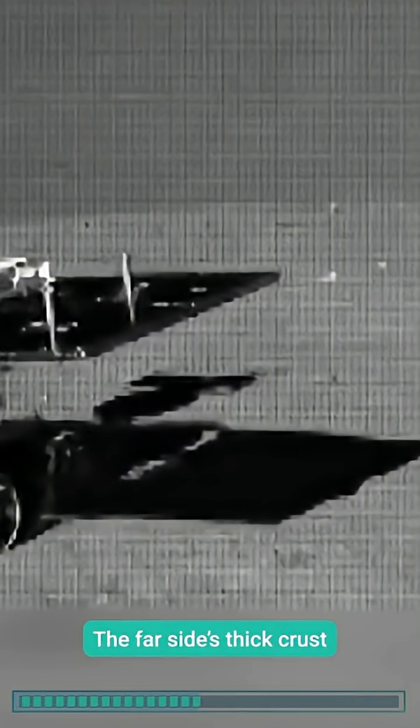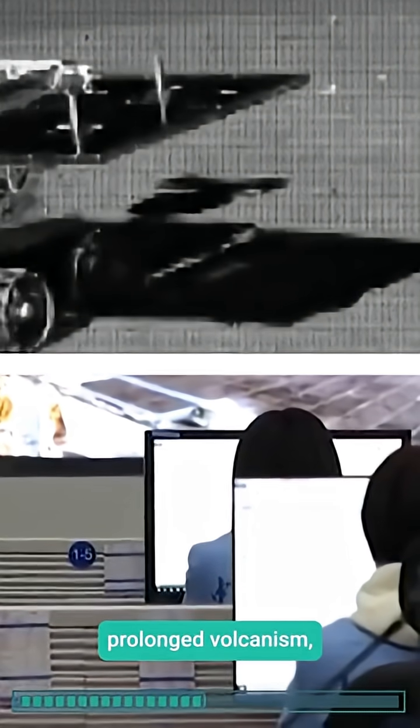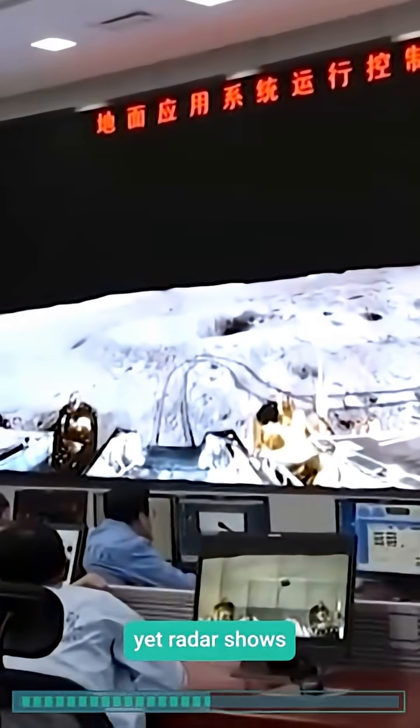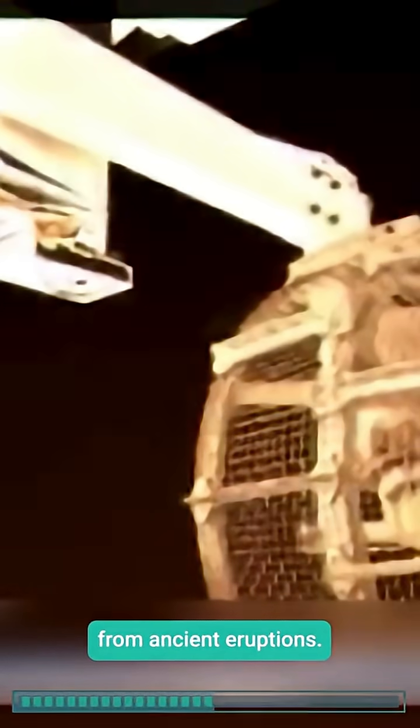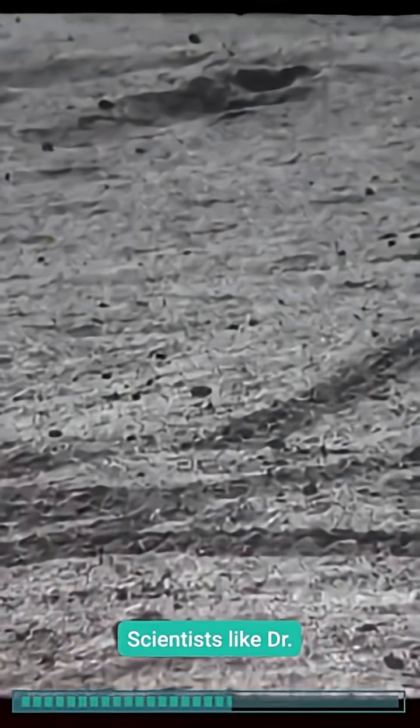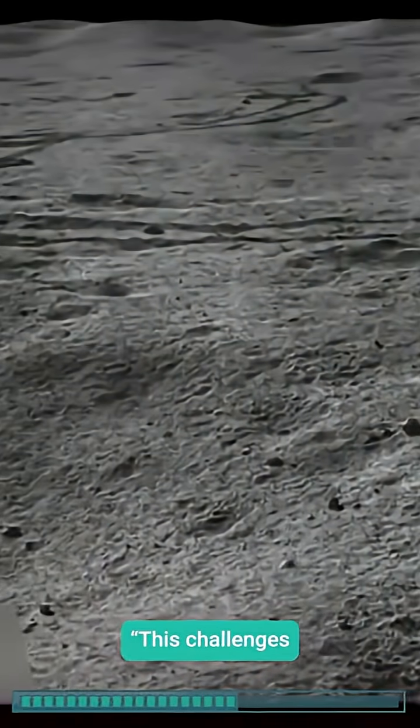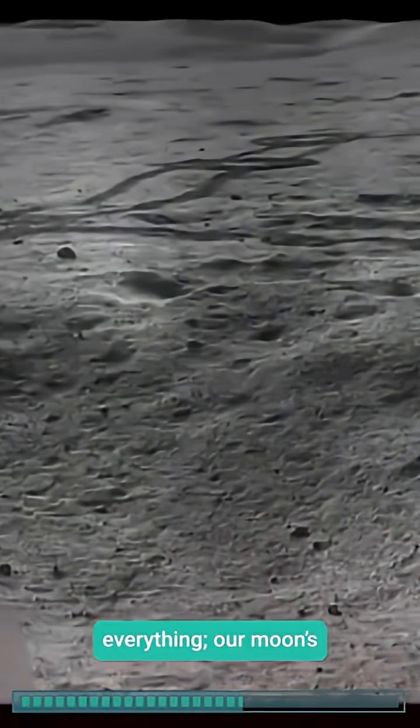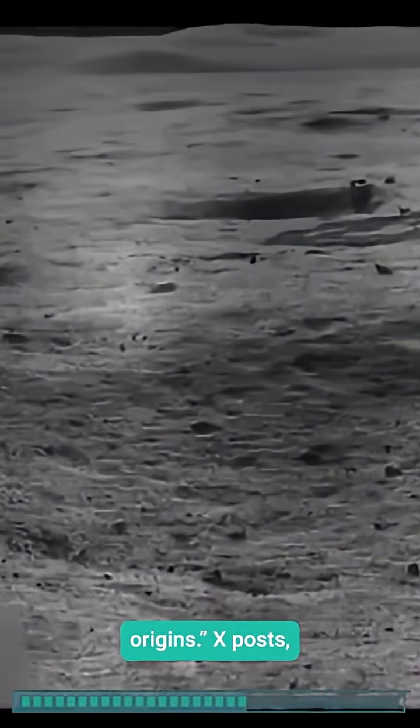The far side's thick crust shouldn't host prolonged volcanism, yet radar shows layered basalt from ancient eruptions. Helium-3's abundance defies models of lunar formation, suggesting unknown processes. Scientists like Dr. Li Wei are floored—this challenges everything: our moon's history, Earth's origins.